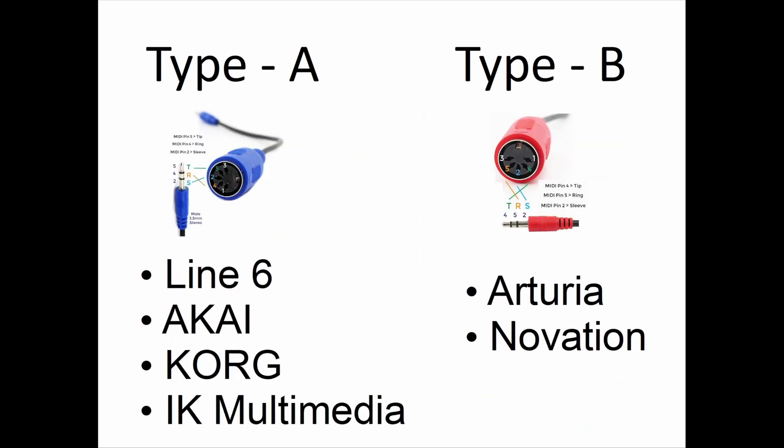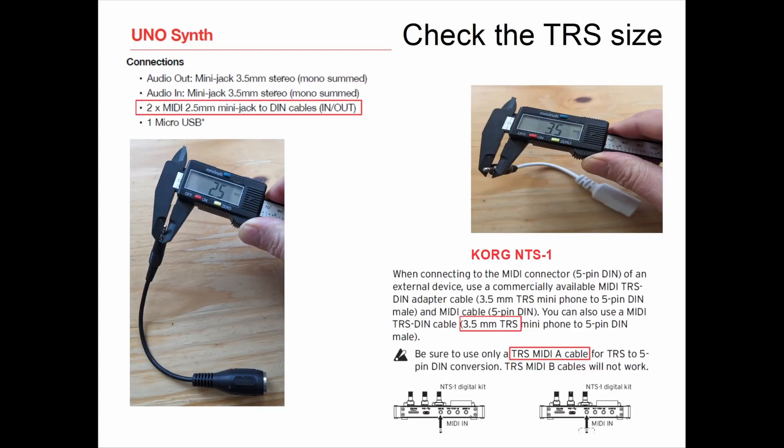How do you tell which one you need? Common usage among Korg, Akai, IK Multimedia, and Line 6 is Type A, and Arturia and Novation typically use Type B. But what you really need to do is go to your documentation, look in the back of the manual, and see if it tells you what style of connector you need.